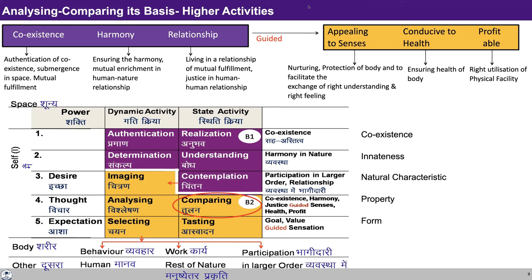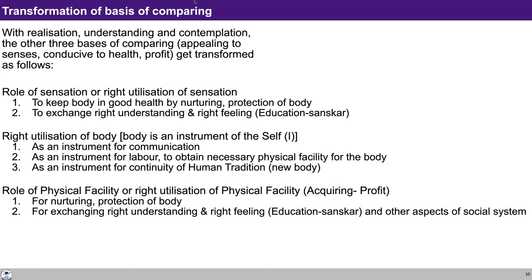So through sensation we are able to nurture and protect the body rightly, and also facilitate the education part — the exchange of right understanding and right feeling. The basis for conducive to health gets transformed in terms of ensuring health of the body, and similarly the basis for profit making gets transformed in terms of right utilization of the physical facility. There is realization of coexistence, understanding of innateness, and contemplation of natural characteristic. We are able to test the form, analyze the property, contemplate the natural characteristic, understand the innateness, and realize the coexistence.